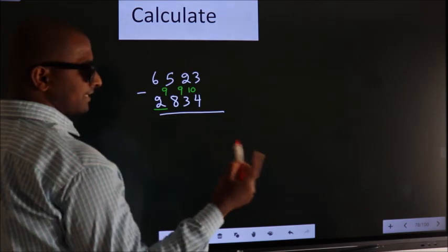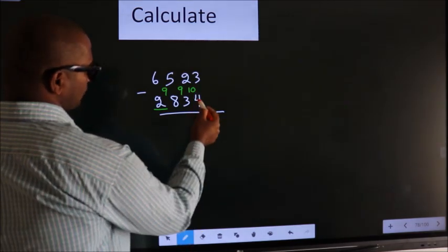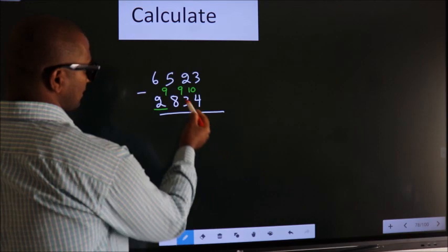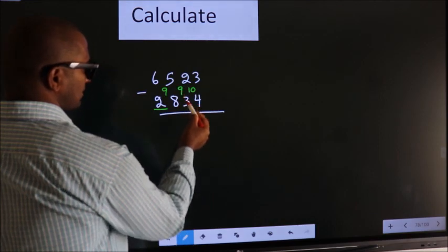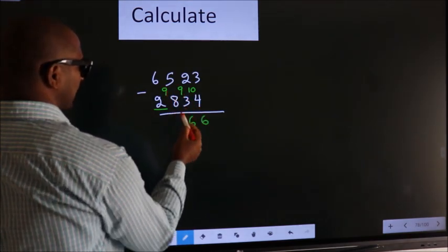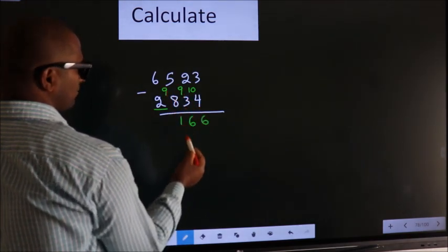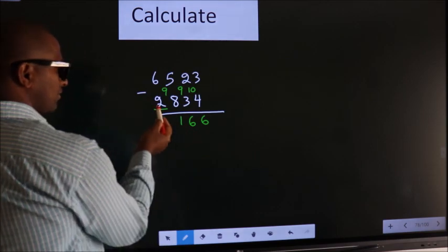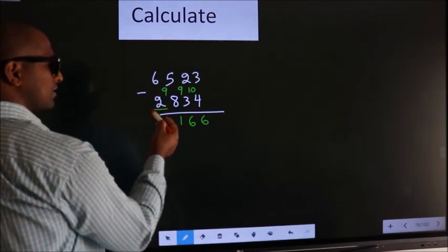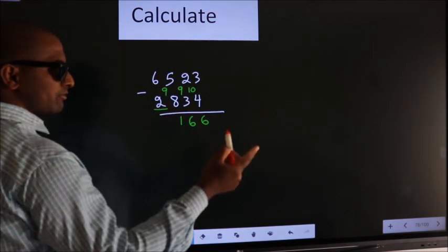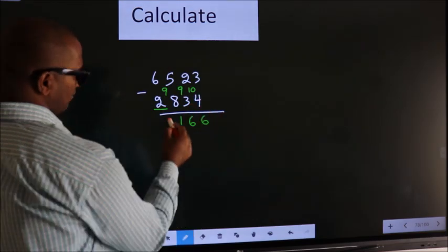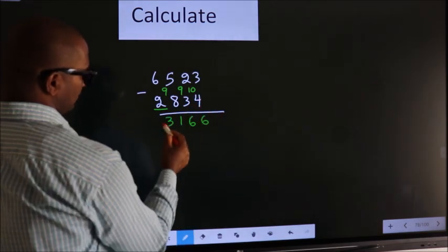Next, 10 minus 4, we get 6. 9 minus 3, we get 6. 9 minus 8, we get 1. For the first digit, you do 6 minus 2, we get 4. Decrease more by 1, we get 3.